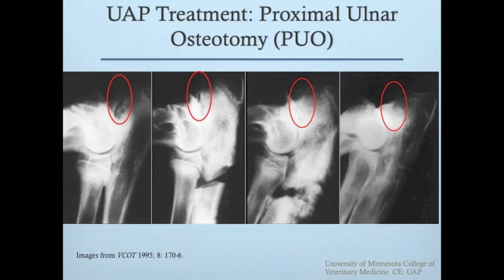This series of radiographs from a dog treated with proximal ulnar osteotomy shows that over the course of several months, both the UAP and the proximal ulnar osteotomy healed. On the final radiograph, there is little radiographic evidence of elbow osteoarthritis, demonstrating the favorable long-term outcome of this approach.